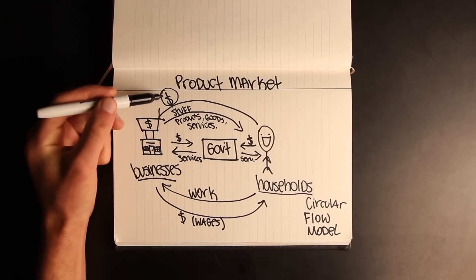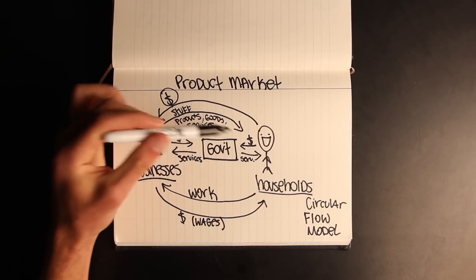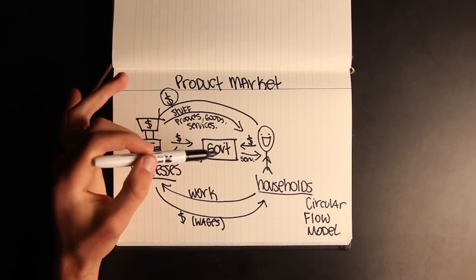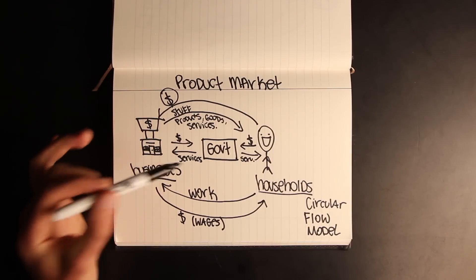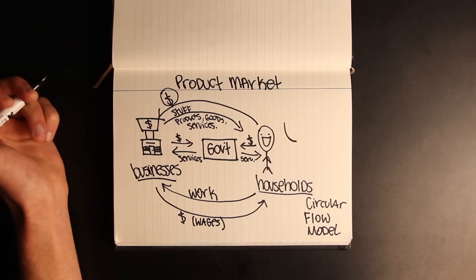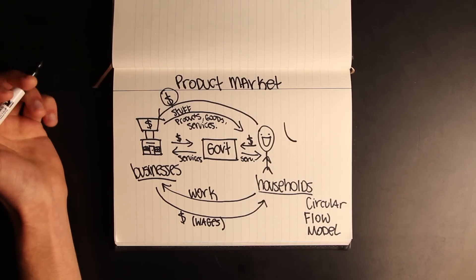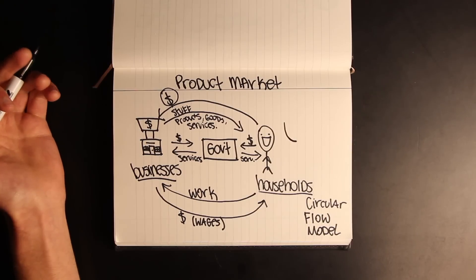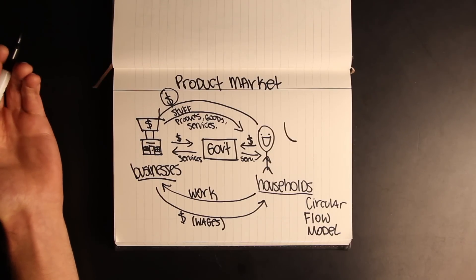This is the product market shown in a circular flow model, and what this model shows is how everything is intertwined — one change in one spot can impact everyone. For example, if businesses raise prices on stuff, people buy less, people pay less in taxes, the government has less money to provide services. Basically, any one change impacts the businesses, the government, and the households — the rest of the economy.